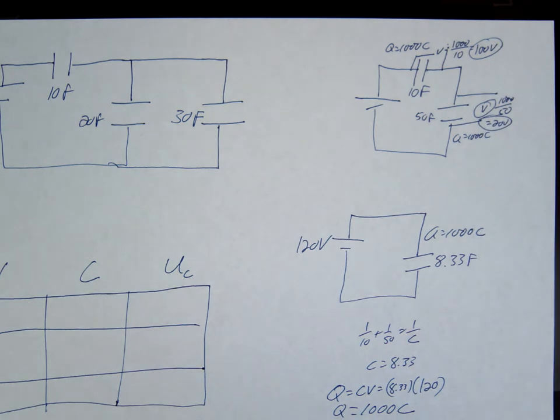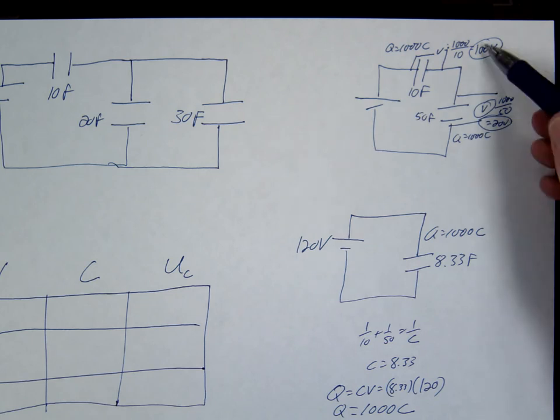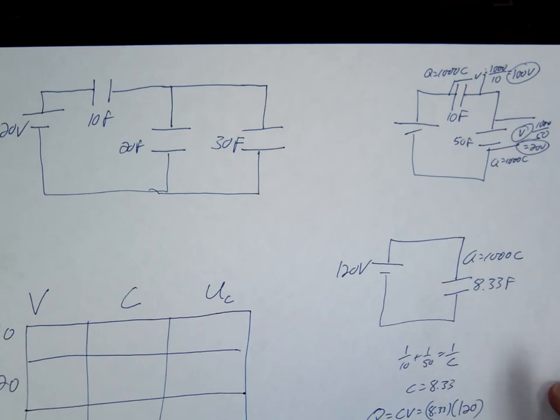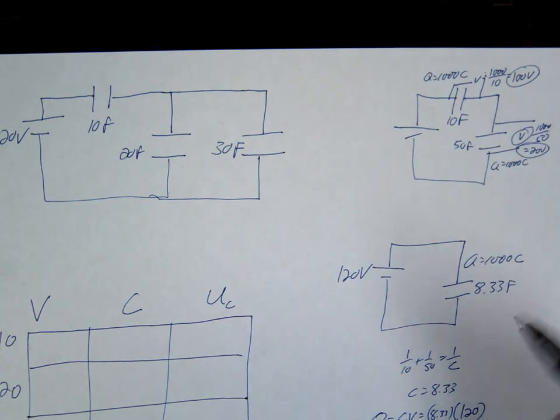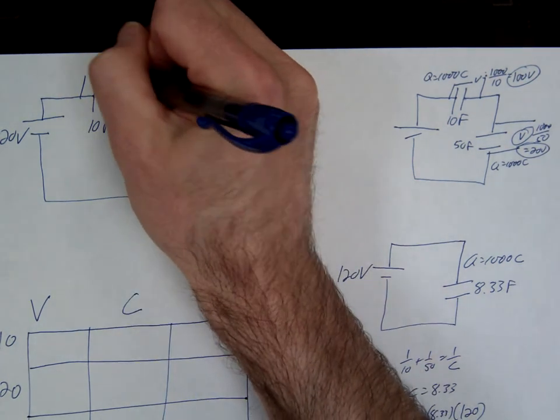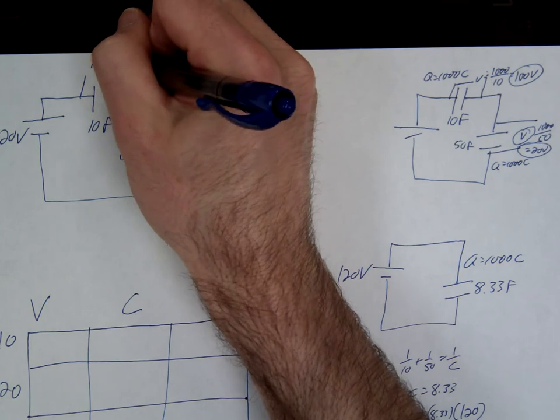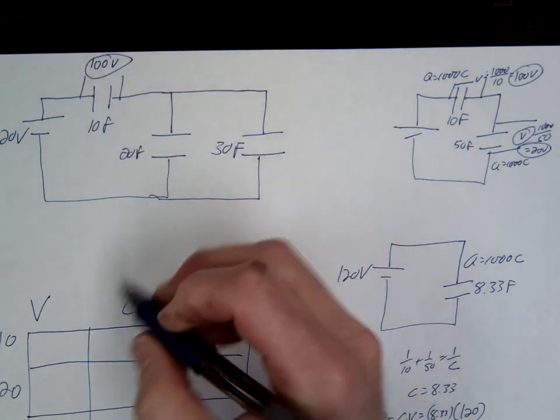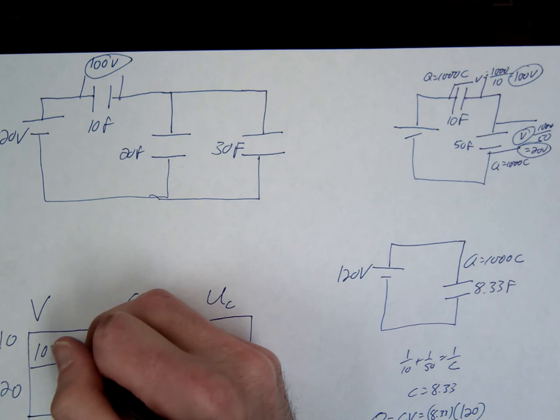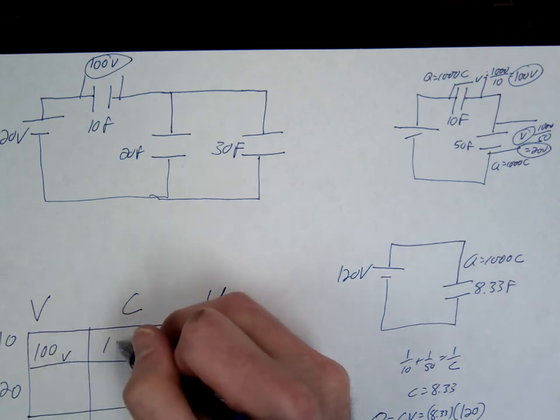You can do the little mini check. You know that those two should add up to 120, so we must be on the right track. Let's go back to this circuit. This one is going to be 100 volts. So we've already found this one, 100 volts. And the charge was 1000.